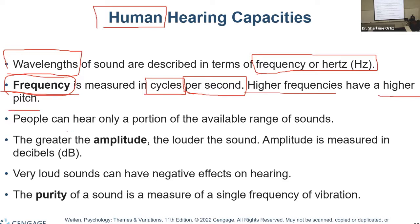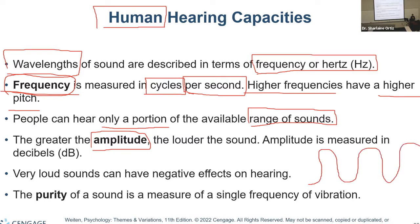Just like with vision, where we can only see a certain portion of the light wavelength, we can also only hear a specific range of sound. Amplitudes — the height of the sine wave — are measured in decibels, just as wavelengths are measured in Hertz.